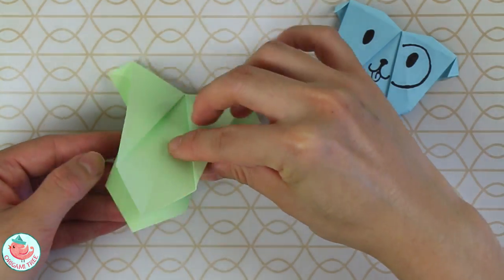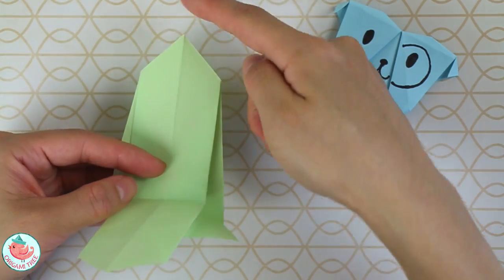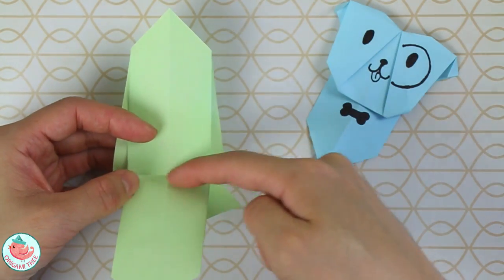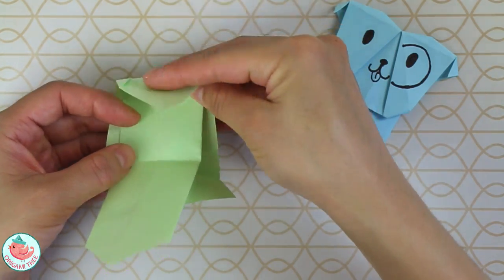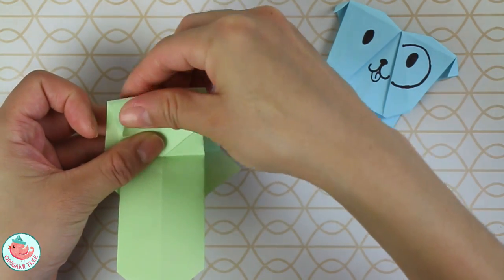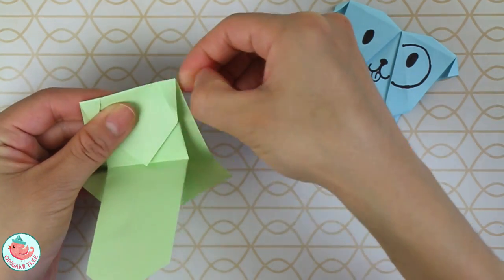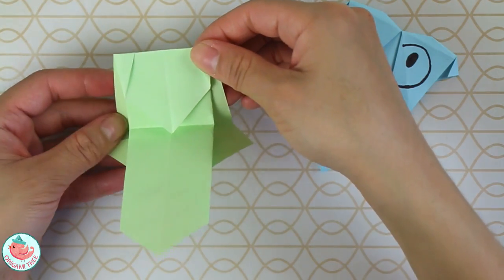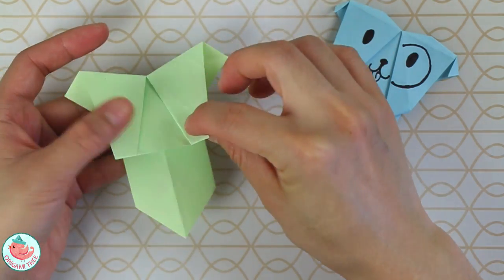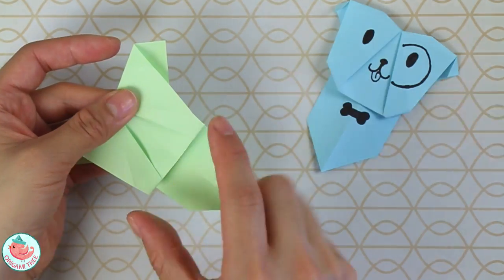Then open it up. Take this tip and align it to this crease right here. You're going to fold it straight down and crease that in. Then fold it back down.